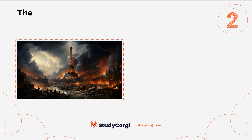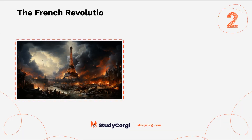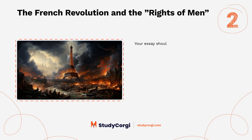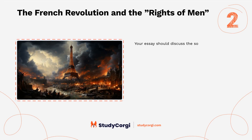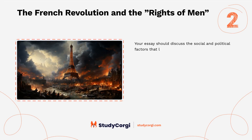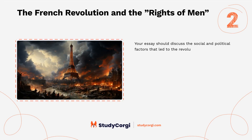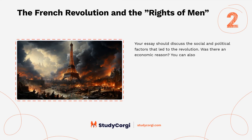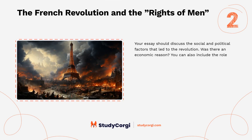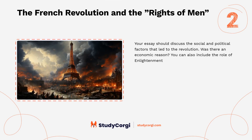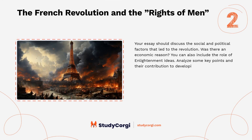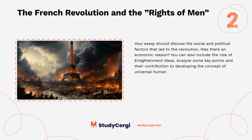The French Revolution and the Rights of Men. Your essay should discuss the social and political factors that led to the revolution, including any economic reasons, and the role of Enlightenment ideas. Analyze key points and their contribution to developing the concept of universal human rights.